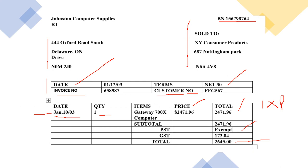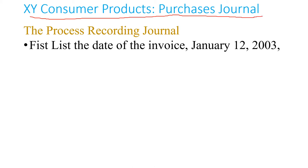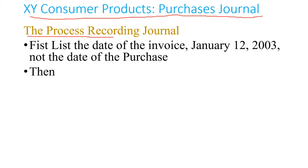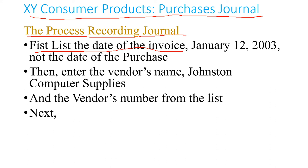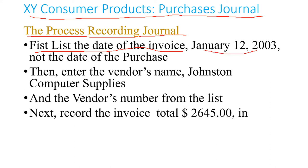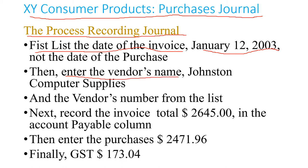Now as an accountant of that company, you will want to record the purchase journal for that transaction. First of all, you have to know the process and put the right information where it's supposed to be. Number one: you record the date of the invoice — not the date of the purchase. The date of the invoice in this case is the 12th of January 2003. Then you enter the vendor's name, which is Johnston Computer Supply, and you record the vendor's number.